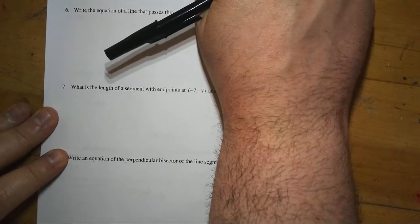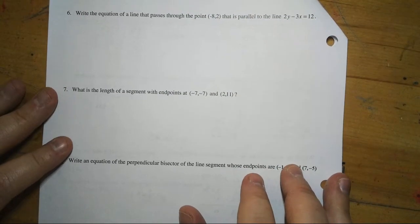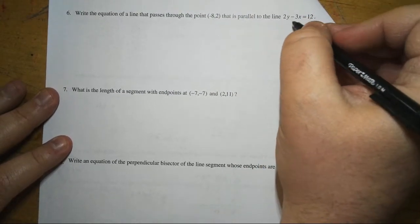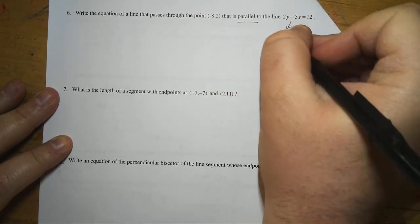All right, on to page 2, so we can take a look here at number 6. We have an equation of the line passing through, and this time it's parallel. So this is just like the last one we did on the other page. Same slope, so solve for y first.